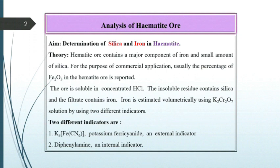The aim of the experiment is determination of silica and iron in hematite. The hematite ore contains a major component of iron and a small amount of silica. For commercial application, usually the percentage of Fe2O3 in the hematite ore is reported.